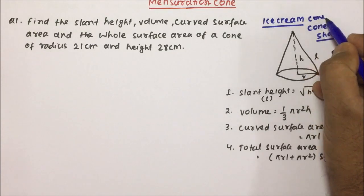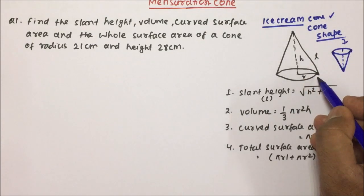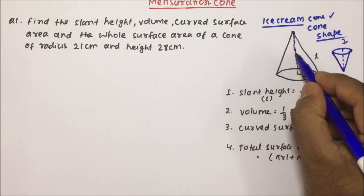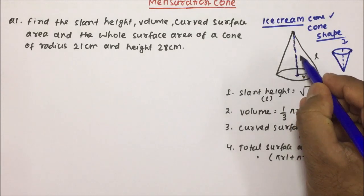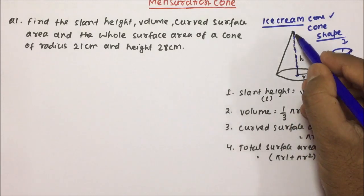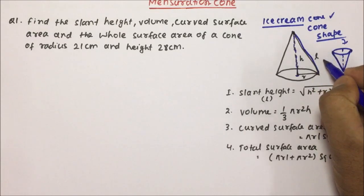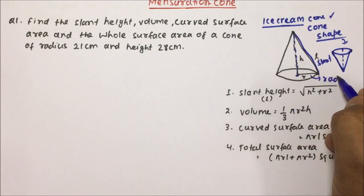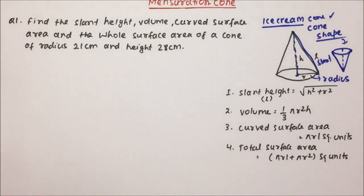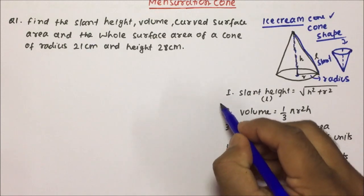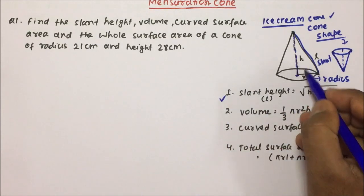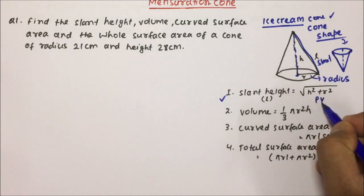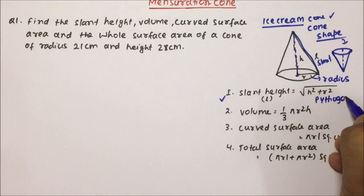The cone ice cream has a cone shape. Now, in the cone diagram, this will be the height, represented by h. This will be the slant height, represented by l. And r will be the radius. Slant height is calculated using Pythagoras theorem: slant height l equals square root of h squared plus r squared.